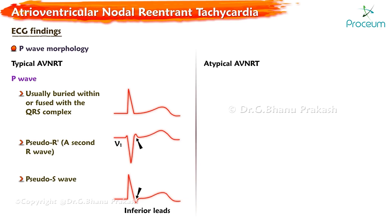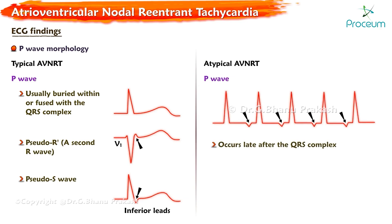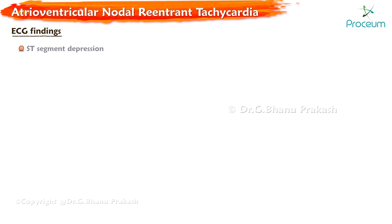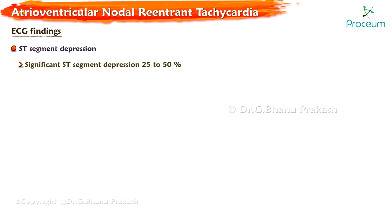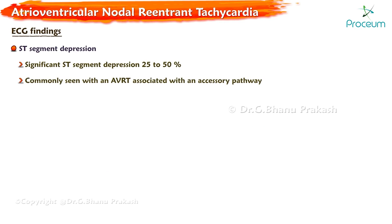In atypical AVNRT, the P-wave occurs late after the QRS complex, often appearing shortly before the next QRS complex, resulting in a pattern that resembles atrial tachycardia. Significant ST-segment depression during tachycardia has been observed in 25 to 50 percent of patients with AVNRT, although it is more commonly seen in those with AV re-entrant tachycardia associated with an accessory pathway.